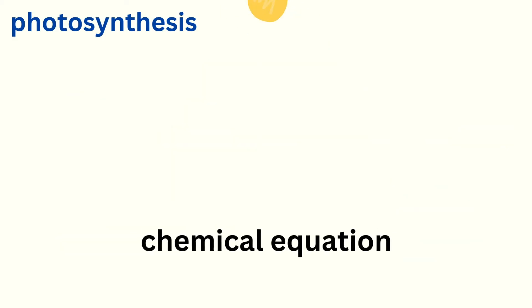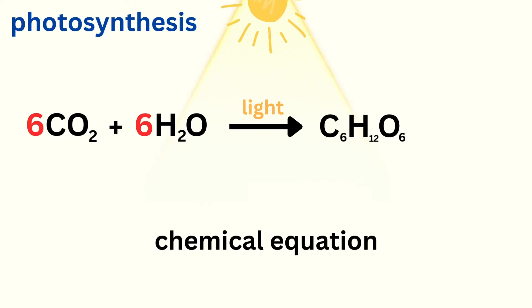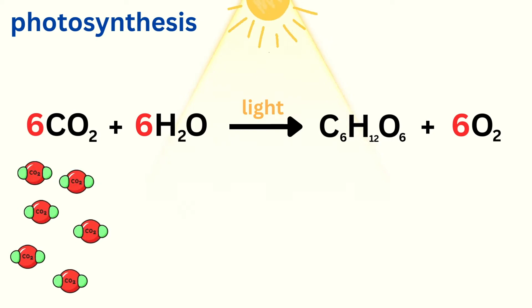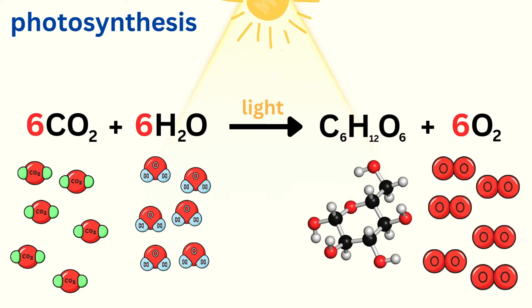Let's break down the chemical equation of photosynthesis. 6CO2 plus 6H2O plus light energy yields C6H12O6 plus 6O2. This means 6 molecules of carbon dioxide plus 6 molecules of water, with the help of sunlight, turn into 1 molecule of glucose and 6 molecules of oxygen.